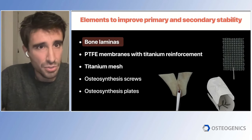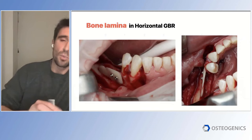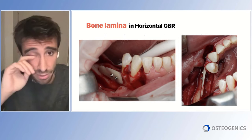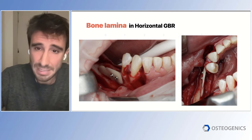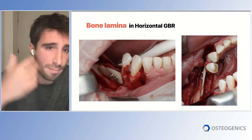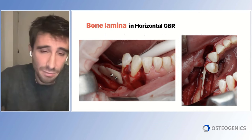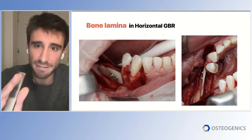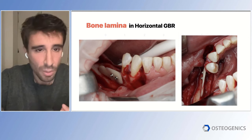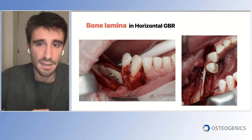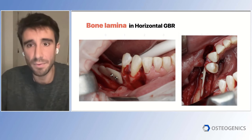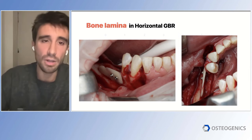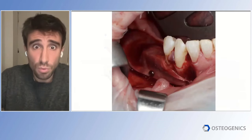First, we'll show a case using a bone lamina combined with a GBR approach. Once again, we have a thin mandible with poor bony housing in the posterior mandible — a long defect. We decided to harvest the bone block from the posterior mandible at the external oblique line, split that bone, and use one of the laminas to build up the morphology and stabilize the graft during all the healing time. We are using an autogenous bone lamina but not doing the CURI technique — I think a GBR approach works better in this type of scenario.